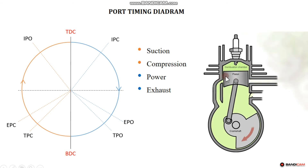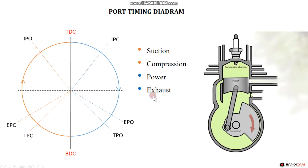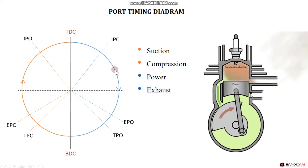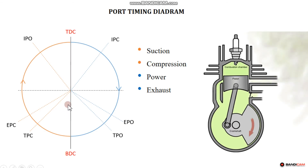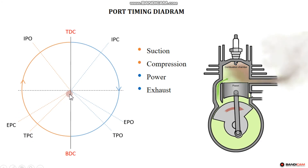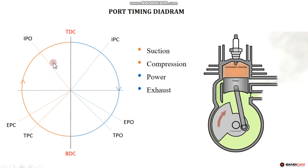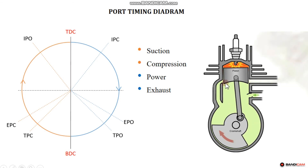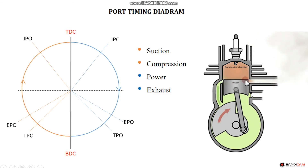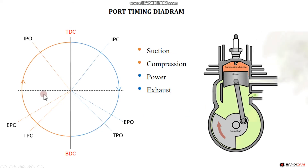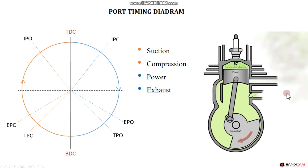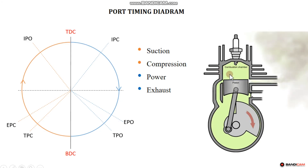This is actually the two-stroke engine port timing diagram. First, the transfer port closing, exhaust port closing — these are added to the inlet port. The transfer port closes first. This is the two-stroke engine port timing.